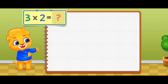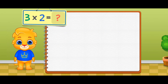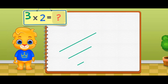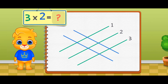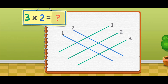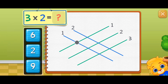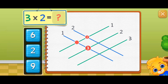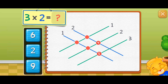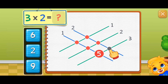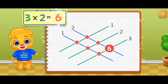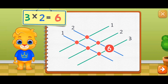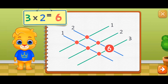Let's learn to multiply using the stick method. Three times two equals — touch intersection points: one, two, three, four, five, six. Three times two equals six.